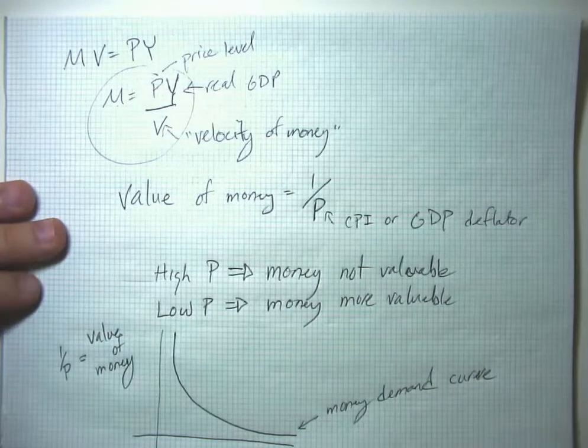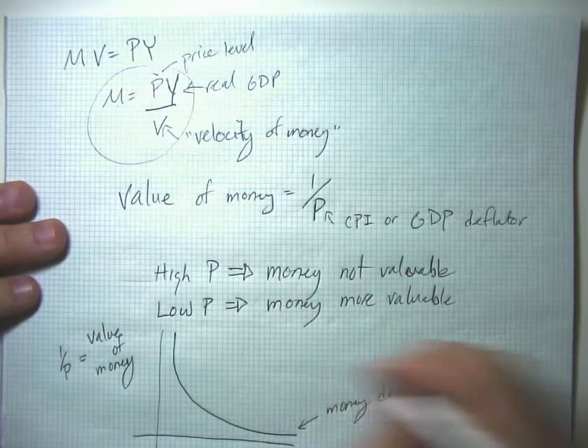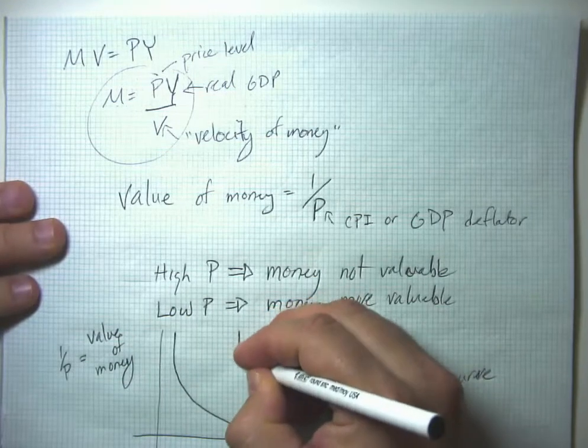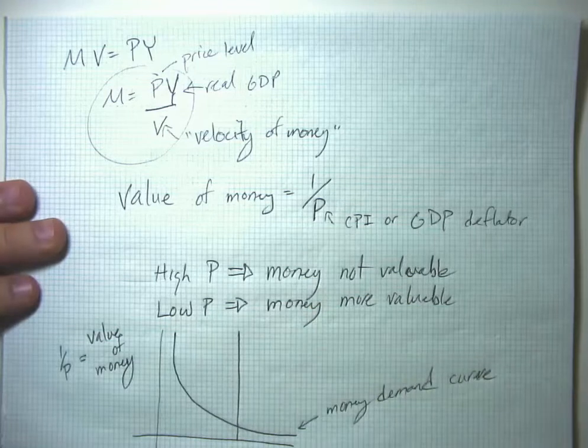And then we think about the money supply. The money supply is, in a modern economy, it's going to be whatever the Fed says it is.